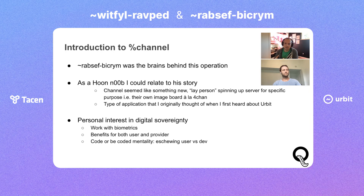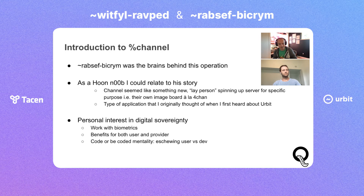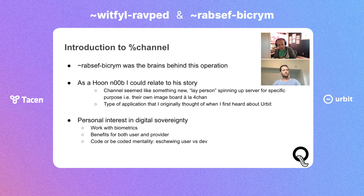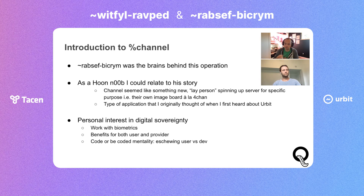Channel is nice because it allows users to boot up just the client version of an image board — taking in content from some central server and allowing them to comment on it or post their own new threads. But with a little bit of configuration, users can turn their Urbit into their own server that then distributes content to their friends. Those are the things that I thought were interesting about the concept.